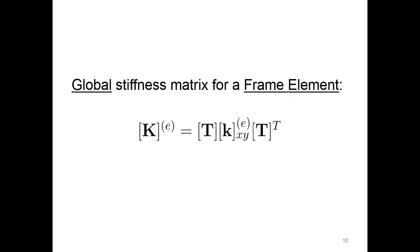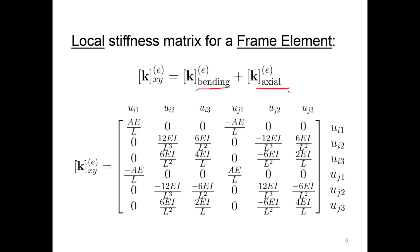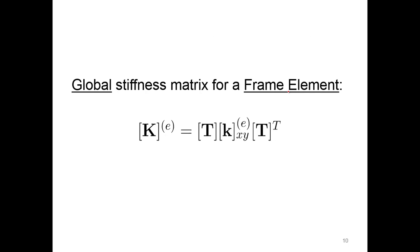So our global stiffness matrix, we were in local coordinates, this right here, this is local coordinates, lowercase k. And here we go to uppercase K, our global stiffness matrix for frame element. We're gonna need a transformation matrix times our local stiffness matrix, times the transpose of the transformation matrix, or the inverse.